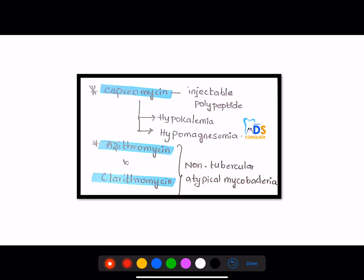Then coming to capreomycin. This is an injectable polypeptide, and it can cause hypokalemia and hypomagnesemia. This is very important. Then azithromycin and clarithromycin are mostly used in non-tubercular, atypical mycobacterial treatment.